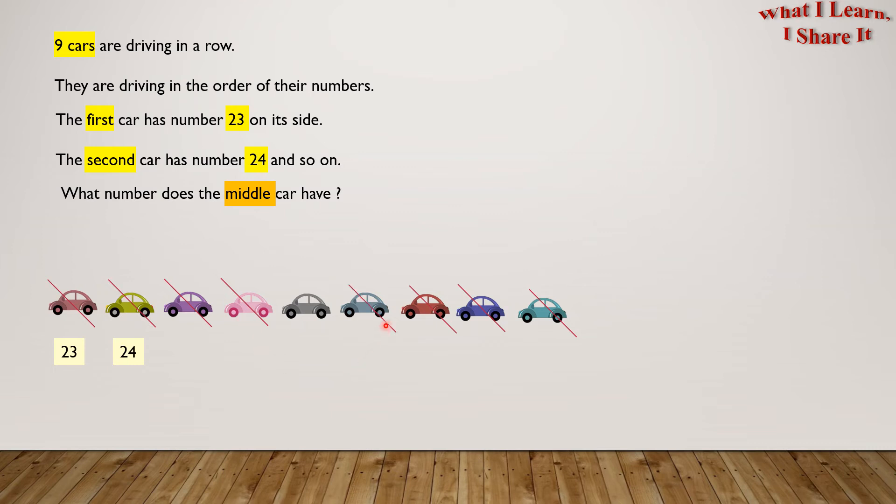Fourth car cut from the back. So the middle car is this gray one, number 25, number 26, number 27. So this middle car has number 27 on it. Yay! We solved the problem. Coming up is the fun part.